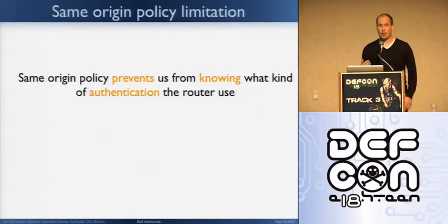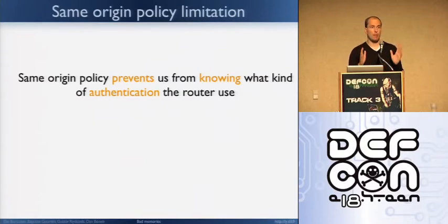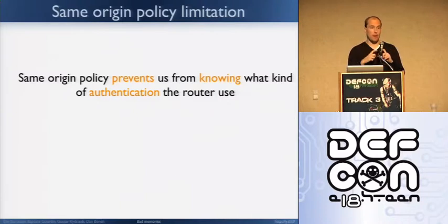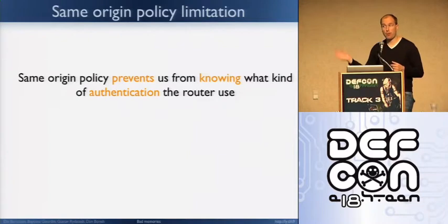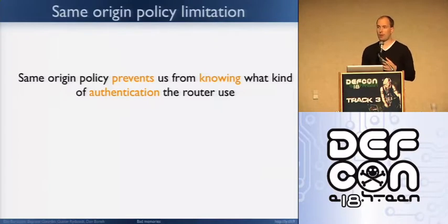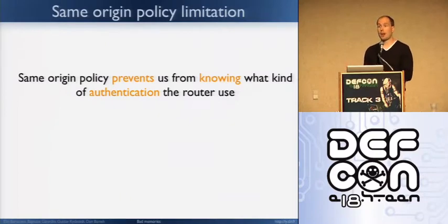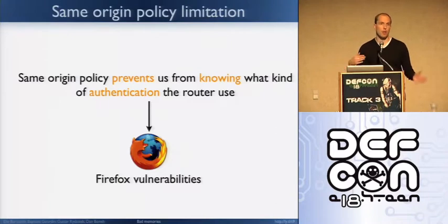There are two kinds of routers. One uses web authentication — a login form like you see on Facebook or Gmail, with username and password inside an HTML form. The other uses basic authentication — an ugly pop-up from web 1.0. We have to know which one you're using because the type of attack differs. Since the same origin policy prevents us from reading the page, we found one or two bugs in Firefox — currently reported — that allow us to know with 100% accuracy which kind of authentication is being used.